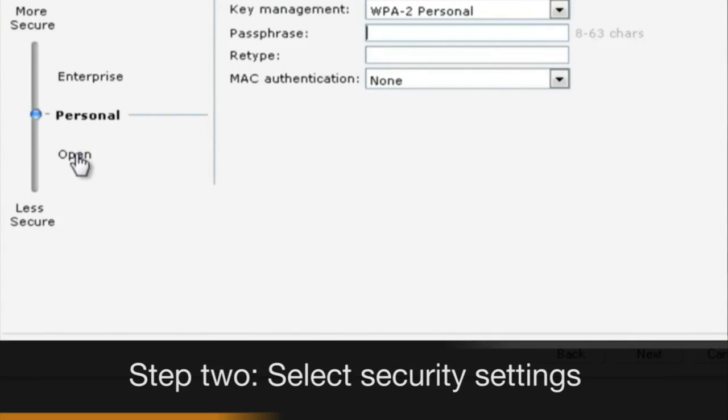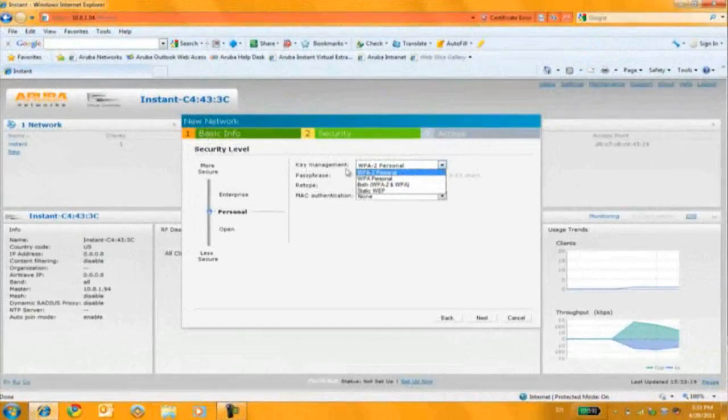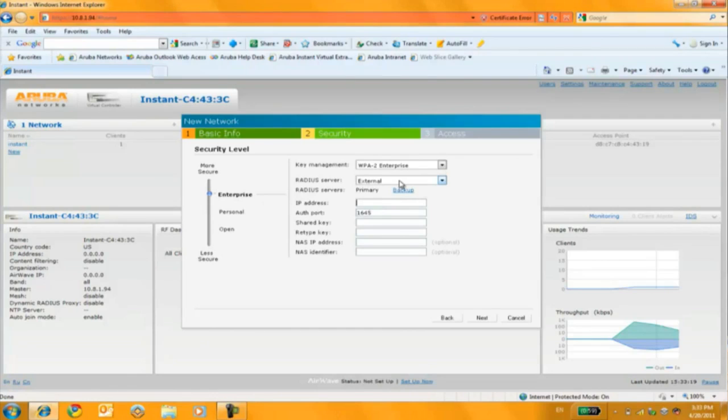I'm not going to have an open network. I do want to lock this down with WPA2. And then the other option here is enterprise, meaning I can connect this to an external authentication service such as RADIUS.